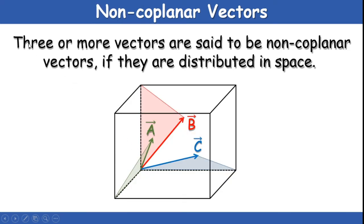Non-coplanar vectors: these are similar to the above example, but with a slight difference. Vectors are said to be non-coplanar if they are distributed in space — that is, if they lie in different planes. In this example, vectors B, C, and A are each lying in different planes, meaning they are distributed in space; hence we call them non-coplanar vectors.